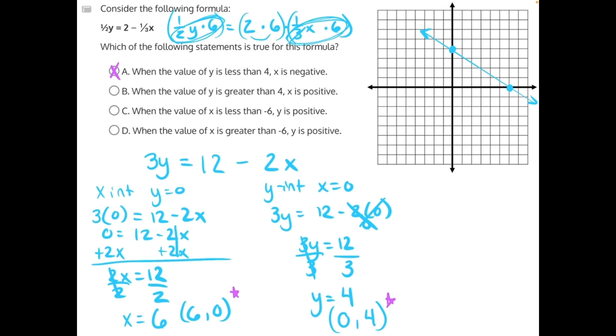B says when the value of y is greater than 4, so on the flip side, everything above this line, x is positive. This is also incorrect because all of our values here on the graph are all in a quadrant where x is negative, not positive. So that means B is also incorrect.